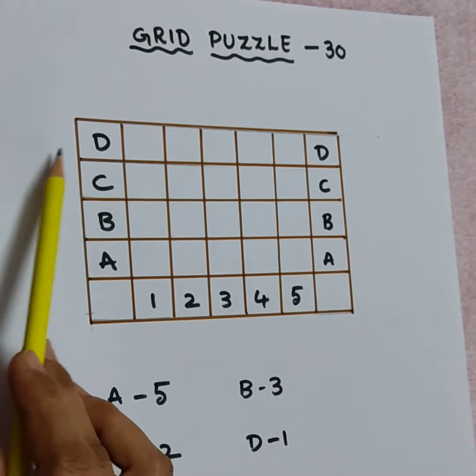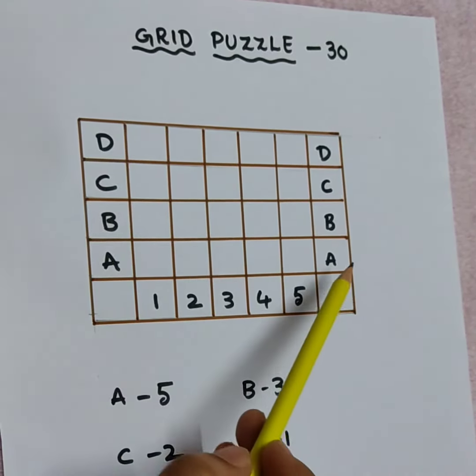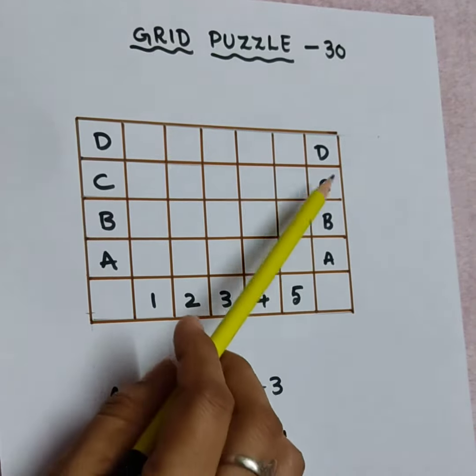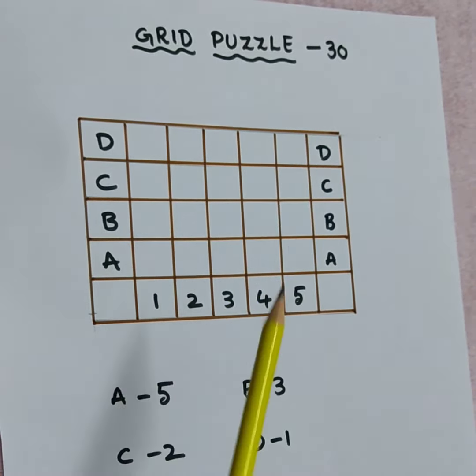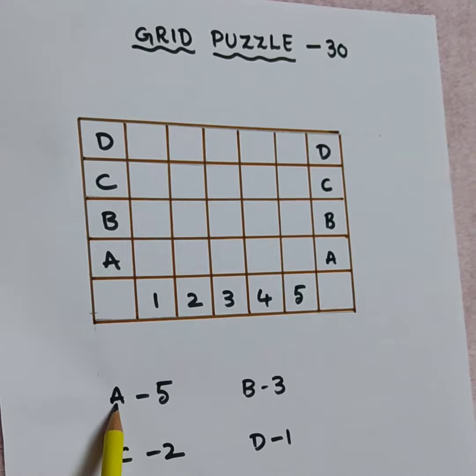Left side I wrote A, B, C, D. Right side also A, B, C, D. Down I given A, 5.